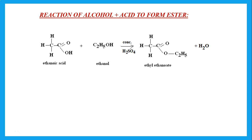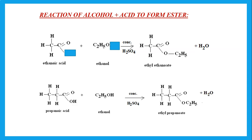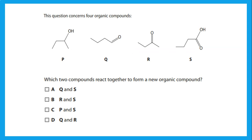Alcohol plus acid forms an ester. When acid reacts with alcohol, we remove the OH from the acid and the H from the alcohol, then join them. For naming: if we start with ethanol and ethanoic acid, we get ethyl ethanoate. If we use ethanol and propanoic acid, the product is ethyl propanoate. Among alcohol, aldehyde, ketone, and acid, the two that react together to form an ester are the alcohol and the acid.